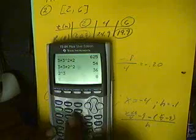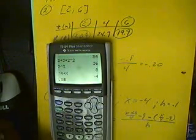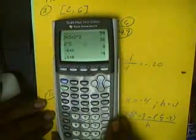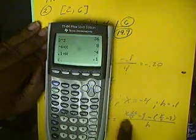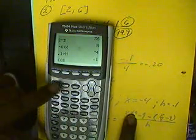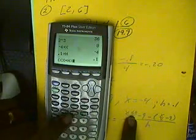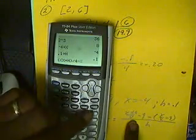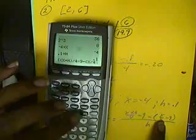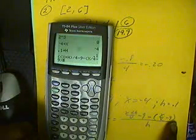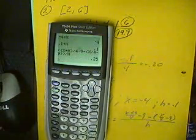I'll store negative 4 into x in the calculator, and store 0.1 into h. Now I'll enter the expression: open parenthesis for the whole numerator, then another parenthesis for x plus h — alpha x plus alpha h — close parenthesis, divided by 4, subtract 9. Then subtract the next parenthesis: x divided by 4 minus 9, close that parenthesis, close the entire numerator, then divide all that by alpha h. Our approximation comes out to 0.25.